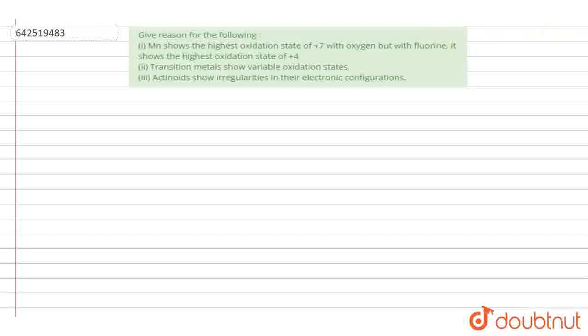Hello everyone, let's start the question. The question says give reason for the following. First question: MN shows the highest oxidation state of +7 with oxygen but with fluorine it shows the highest oxidation state of +4. Second question: transition metals show variable oxidation states. And the third question: the actinoids show irregularities in their electronic configuration.